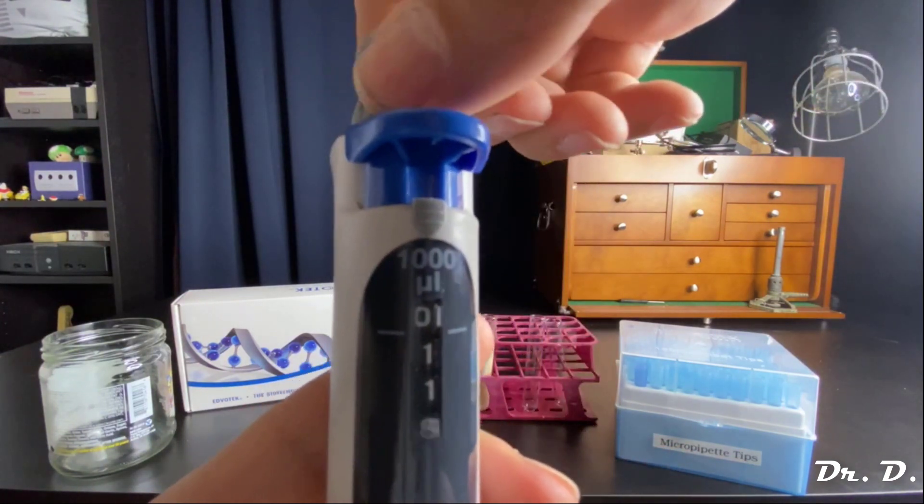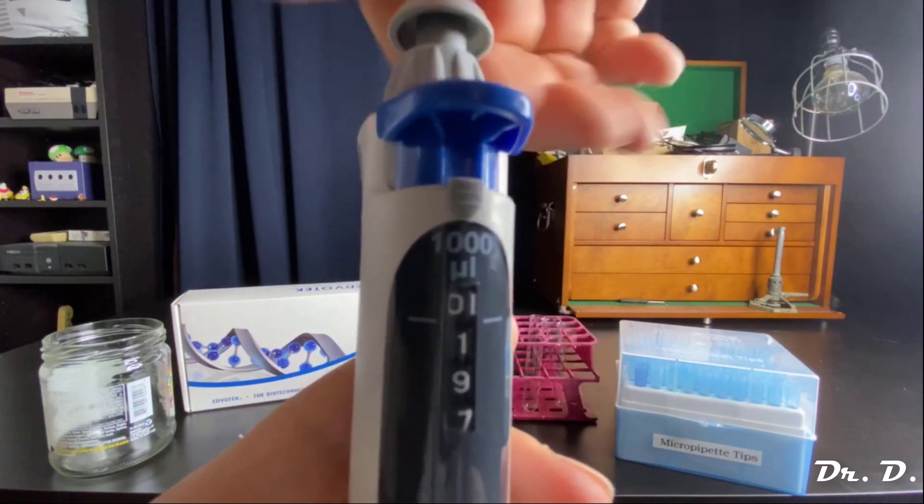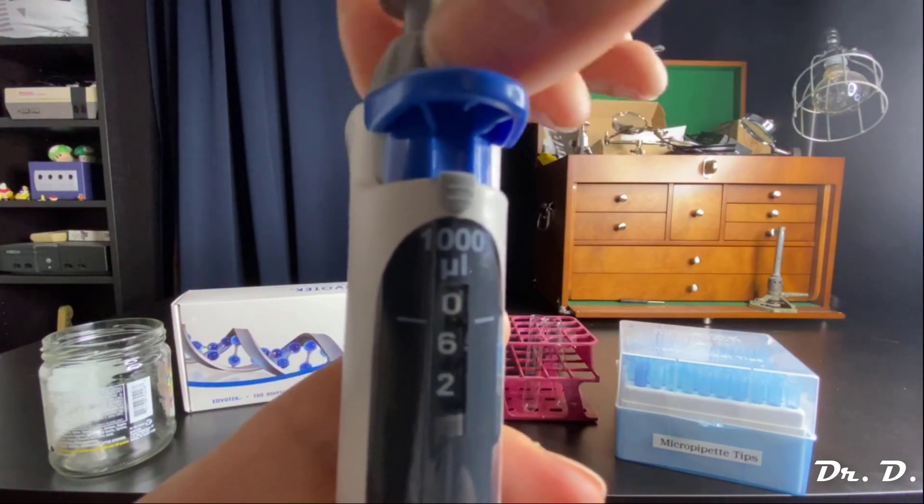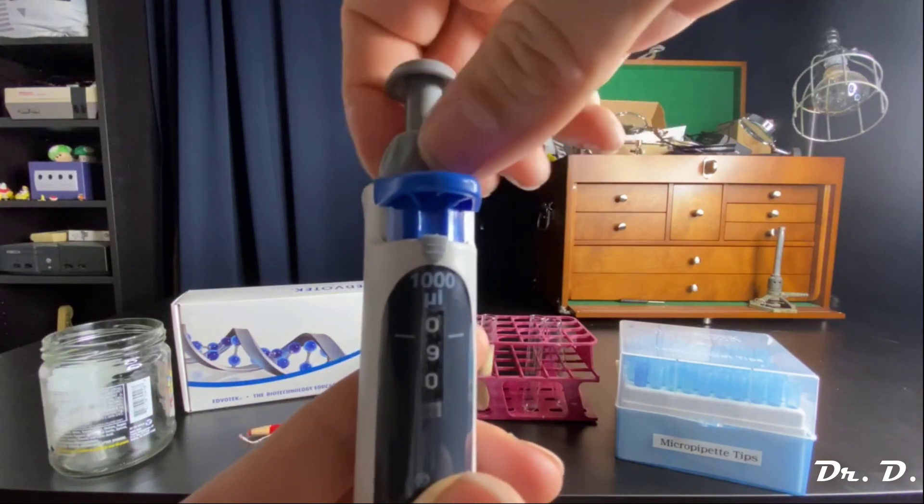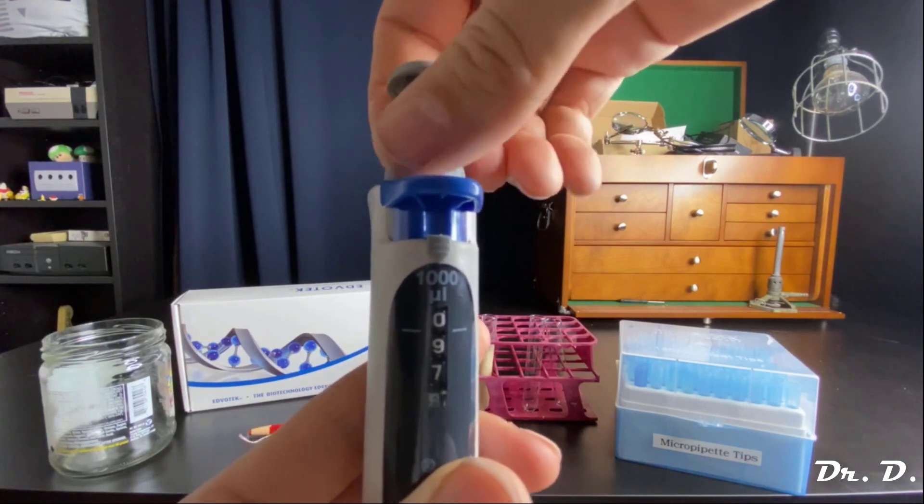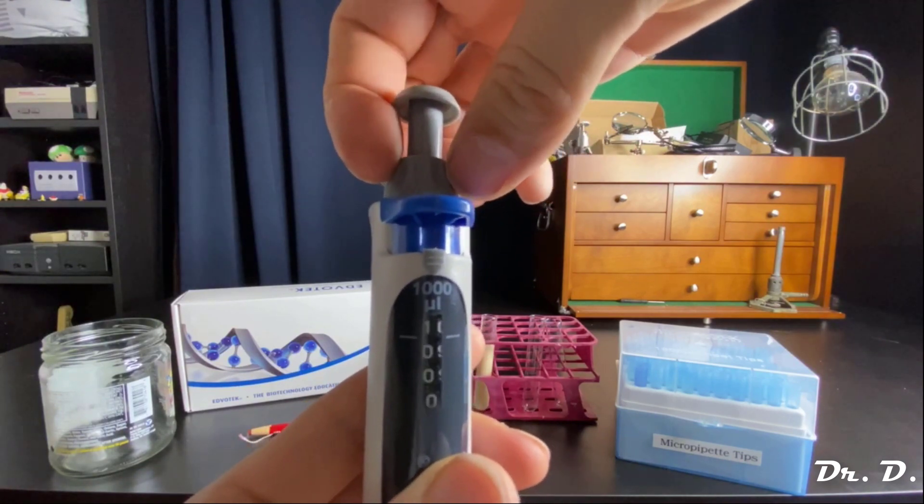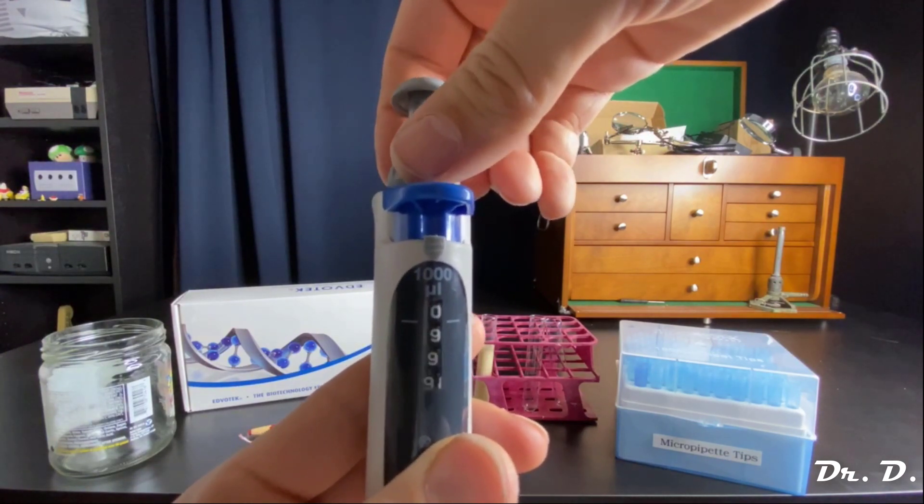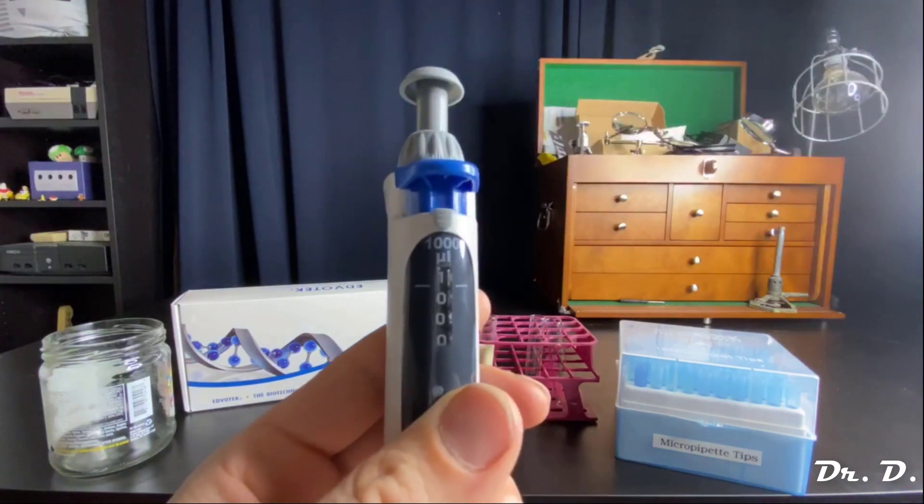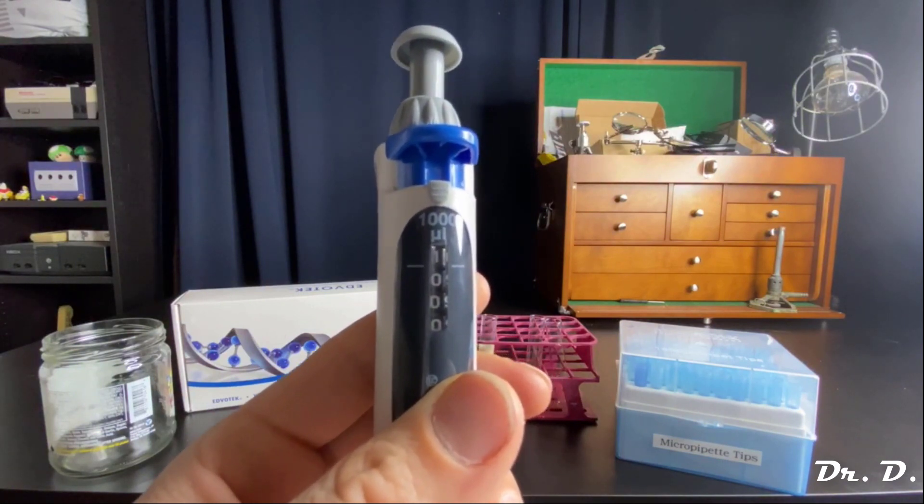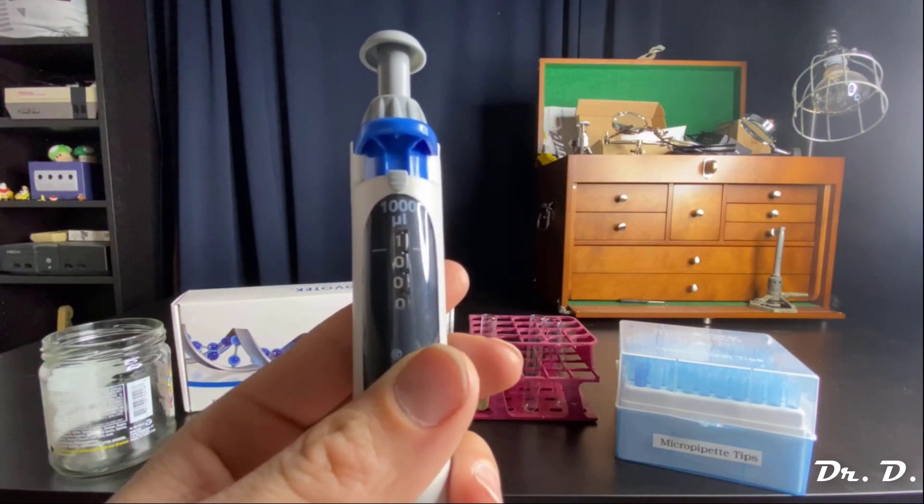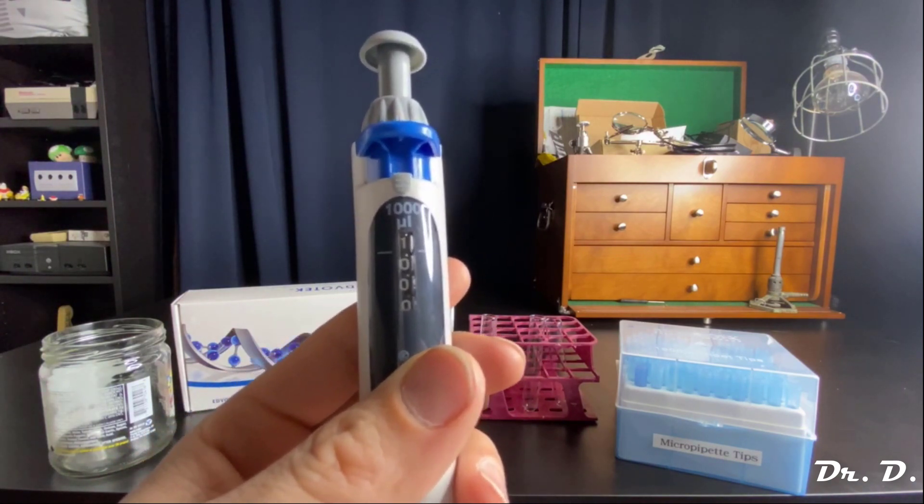The highest setting on this micropipettor would be if we advance it, you have to turn for a while, eventually you reach and roll the odometer over. Here we go. One, zero, zero, zero. That is 1000 microliters. So right now, the micropipettor is set to 1 milliliter or 1000 microliters.